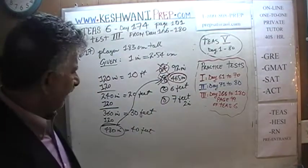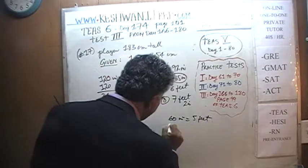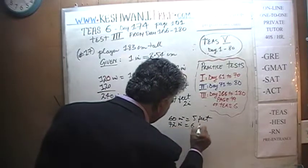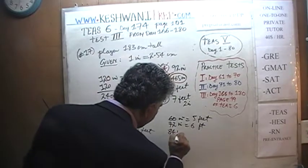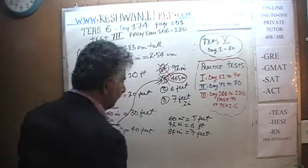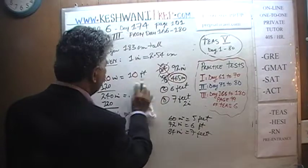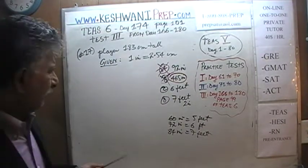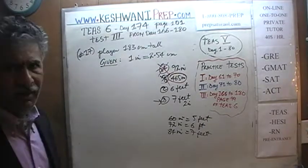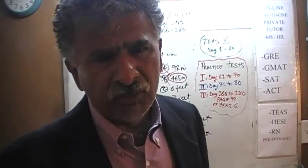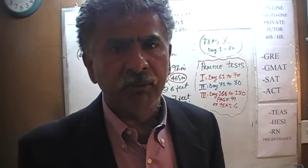It's going to be either 6 feet or 7 feet. 60 inches was 5 feet. Add another 12 — 72 inches equals 6 feet. Add another 12 to 72 — 84 inches is 7 feet. So this guy is somewhere between 70 and 80 inches. Because he's a basketball player, I'm going to assume he's 7 feet tall. And 7 feet is 84 inches — but we're not going to deal with 84. We're just going to pretend he's 80 inches tall to keep the calculation simple.